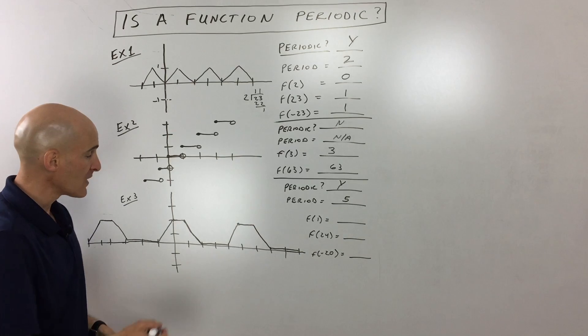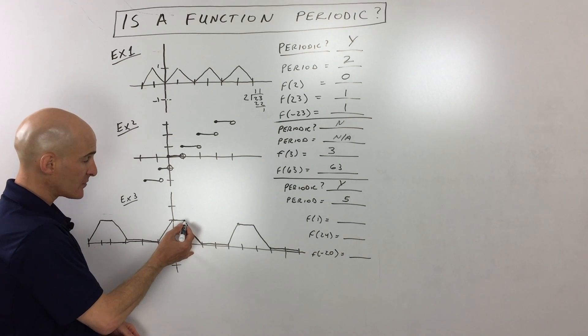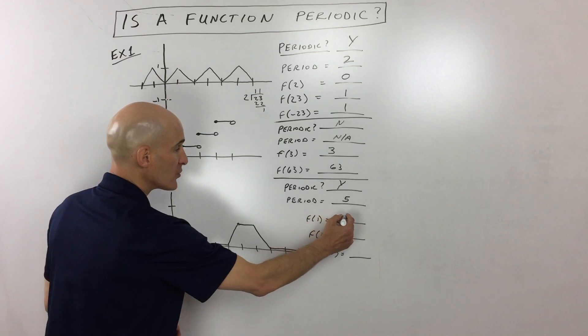So now this one, f of one. So when we go x equals one, one to the right, we go up to the graph. You can see the y value is two.